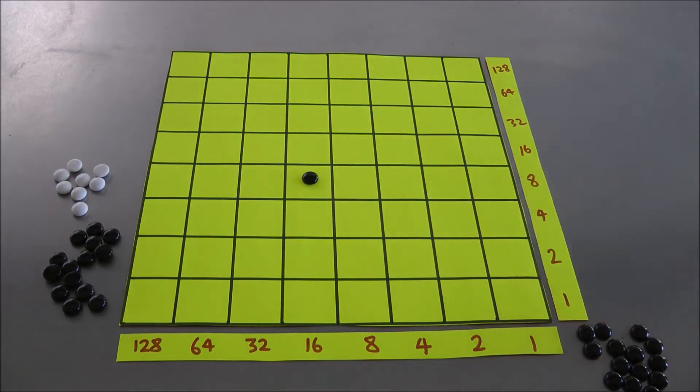So at each spot now, a counter placed in that spot is worth the product of its row and column number. Alright.